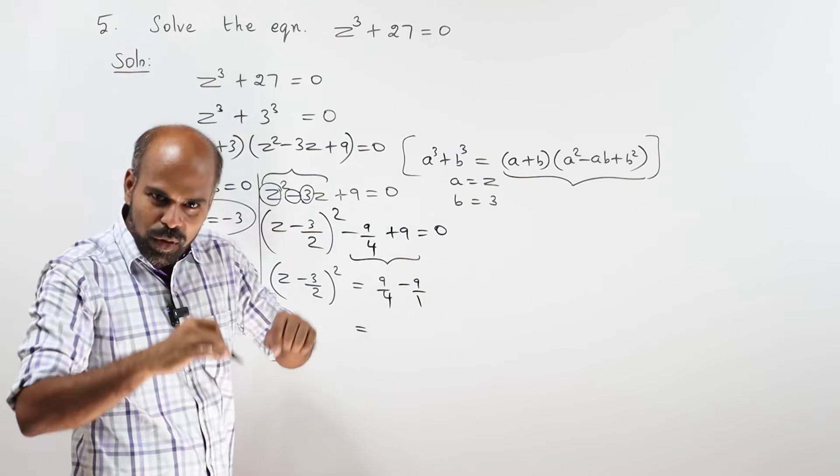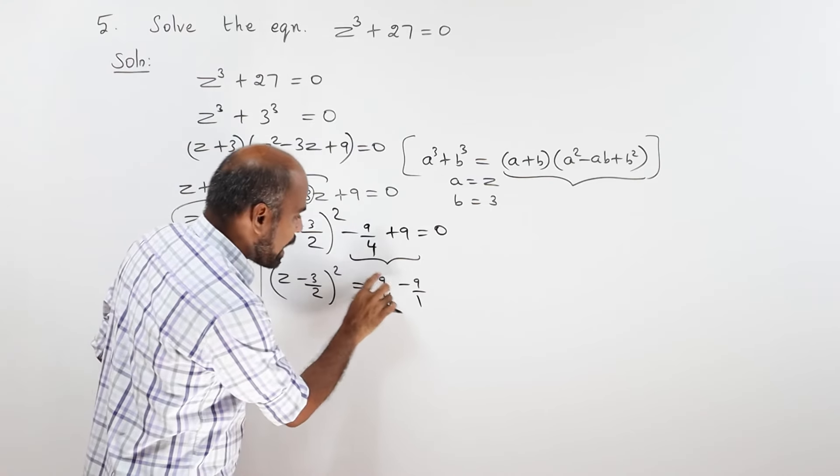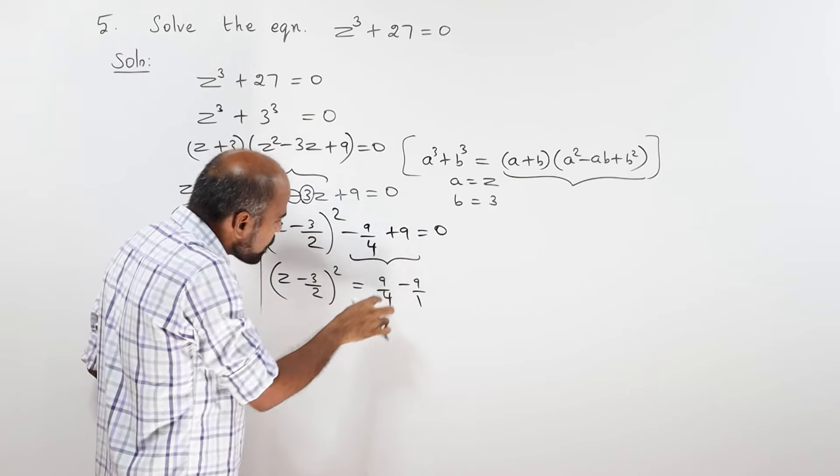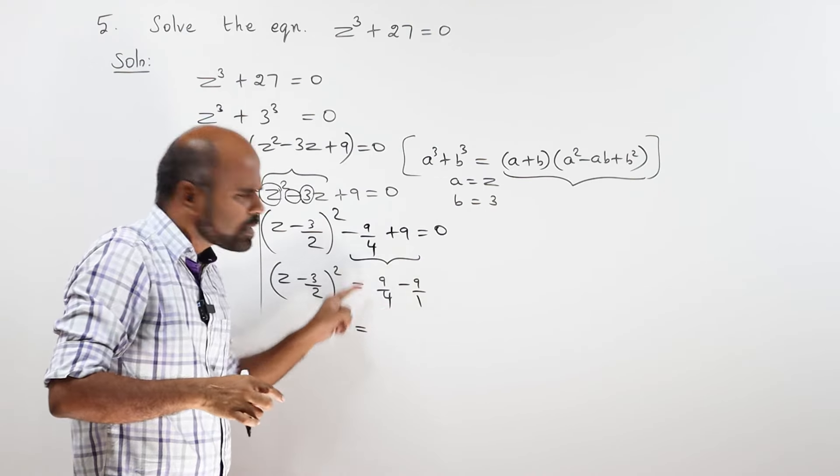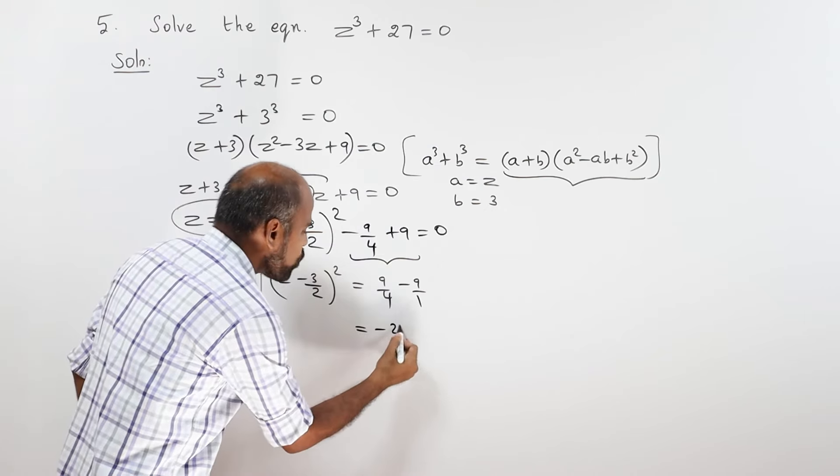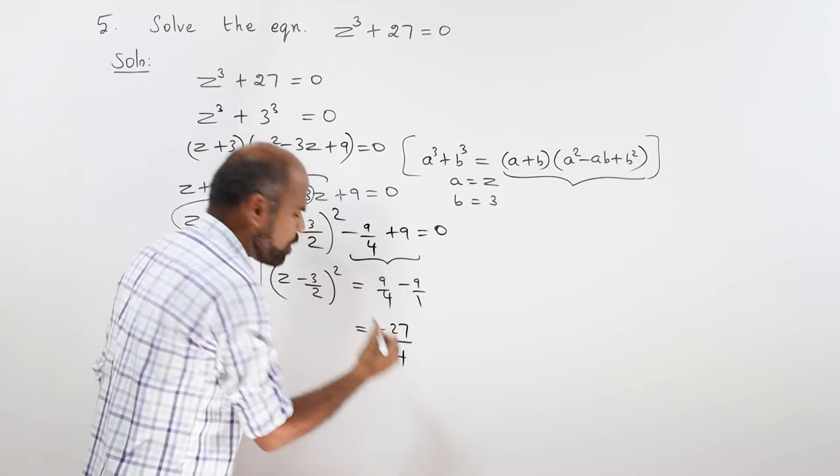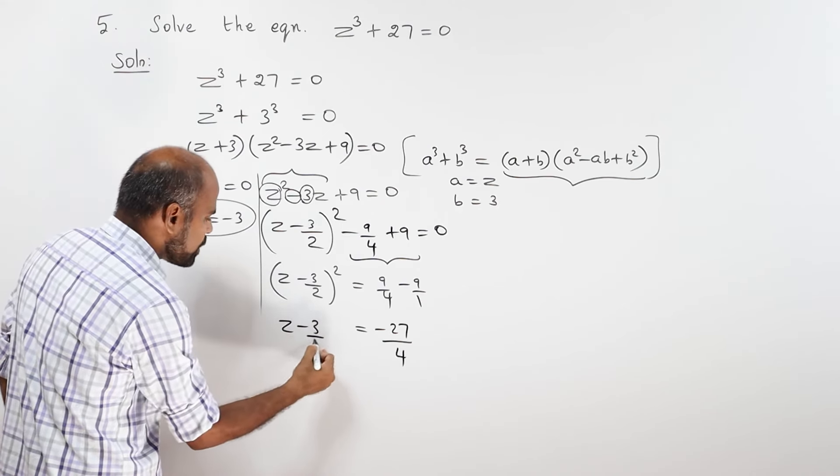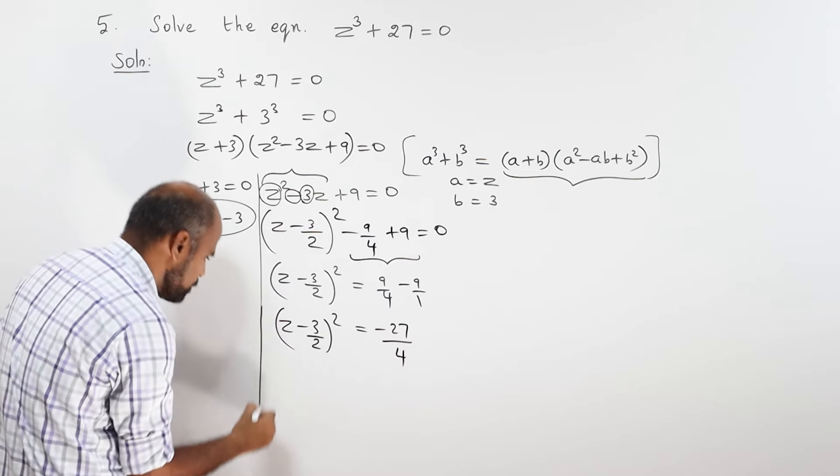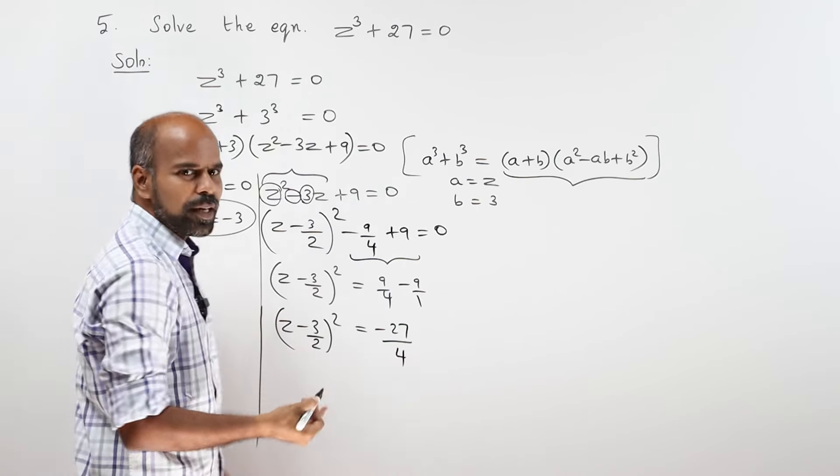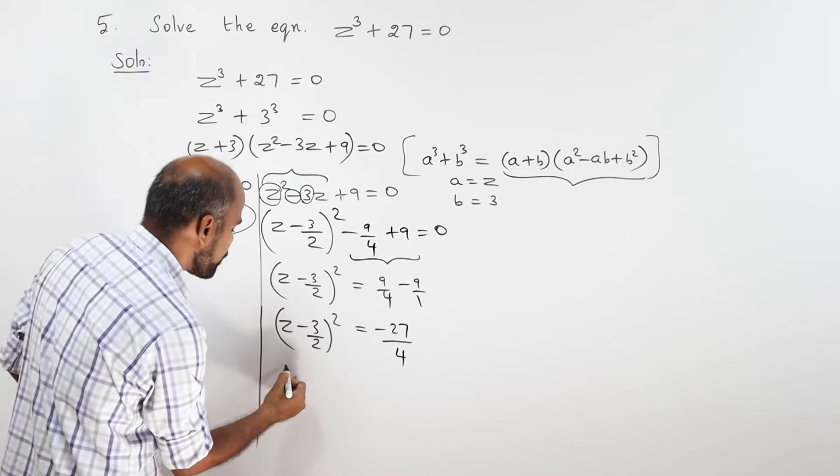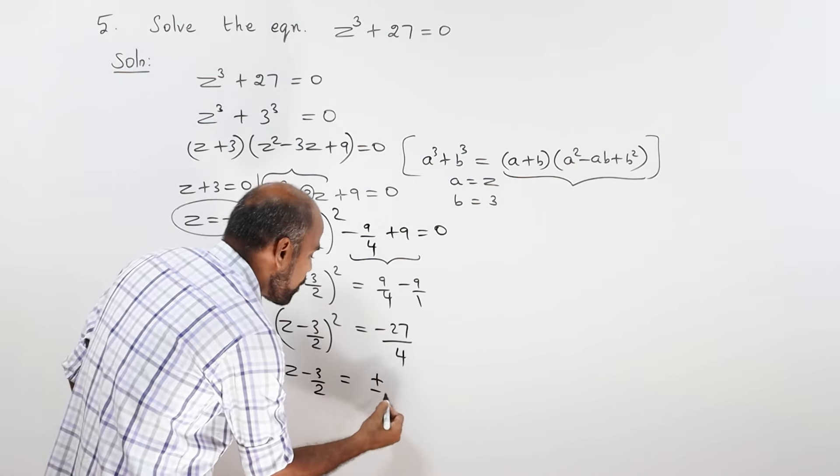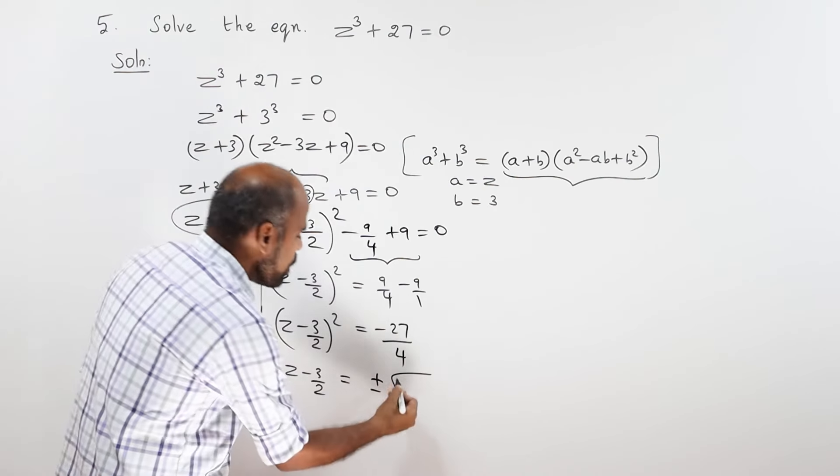Denominator is different. So, we have to take LCM. 9 minus 36. What is 9 minus 36? Minus 27 by denominator into denominator 4. Now, Z minus 3 by 2, the whole square. Square on the side, plus or minus square root.